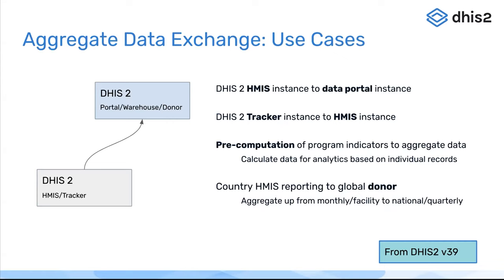For example, if you have a tracker COVID-19 vaccination tracker and you want to aggregate the total number of vaccines delivered by age group and then send that to the HMIS instance where you want to store just the aggregate total numbers, you can do that with the aggregate data exchange app. The tracker data stays in the COVID-19 instance, and the aggregate data lives in the HMIS instance.